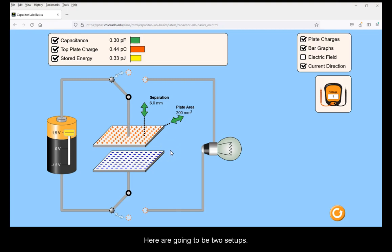Here are going to be two setups. The default setup will start with a battery voltage of 1.5 volts and the plates are set up for a total capacitance of 0.3 picofarads.